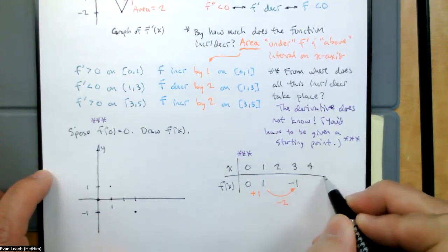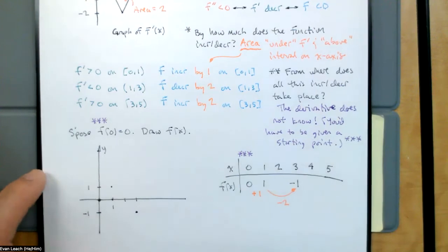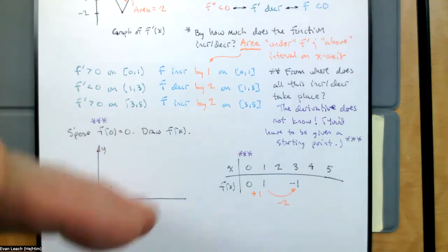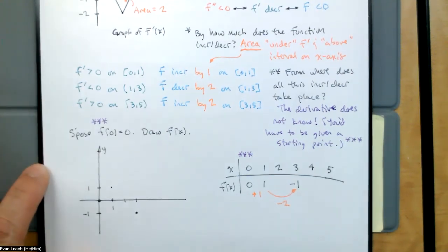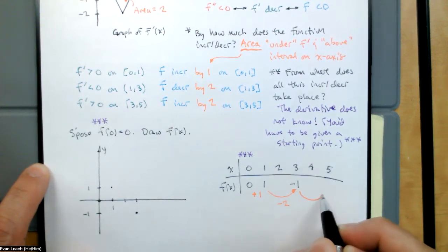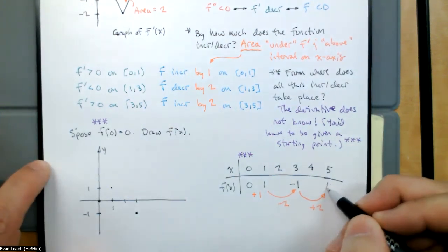On the interval from 3 to 5, we know that the function is increasing and the area says it's increasing by two. So we'll go back up to one.